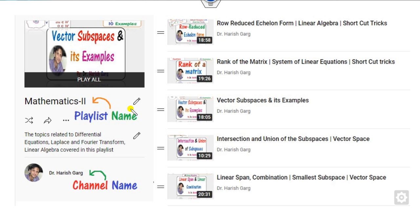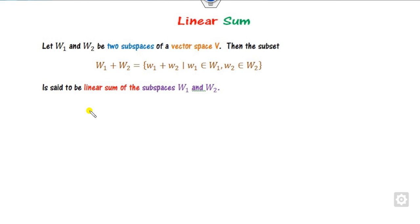This lecture is a continuation of the previous one where we discussed vector spaces. The intersection and linear span are all available in the playlist Mathematics 2. First of all, in order to define the direct sum we must understand what the linear sum is. If you have two subspaces w1 and w2, the linear sum is defined as the set of all elements belonging to w1 and w2.